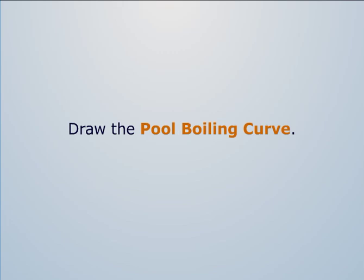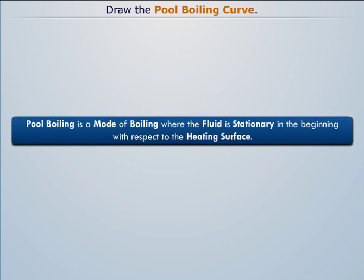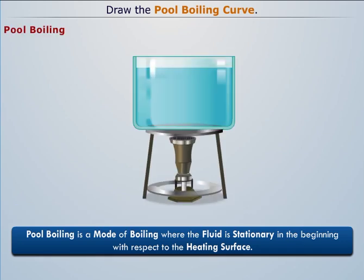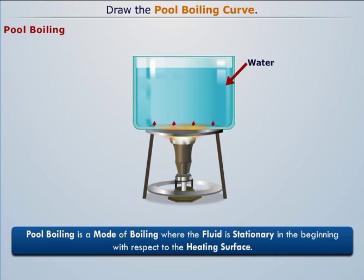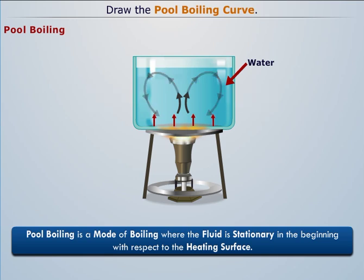Let's draw the pool boiling curve. Pool boiling is a mode of boiling where the fluid is stationary with respect to the heating surface. To understand this, consider a vessel containing water placed on a burner. As heat is transferred from the bottom surface of the vessel to the stationary water, it starts rolling up and down, then bubble formation takes place, and eventually the water gets boiled. This process is pool boiling.